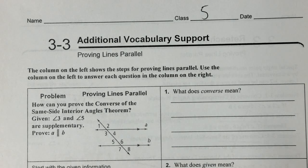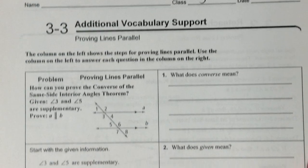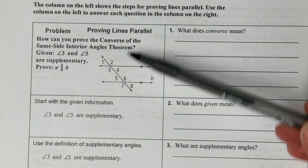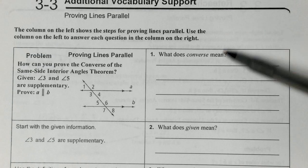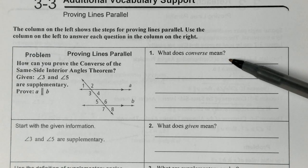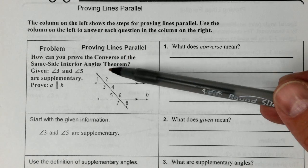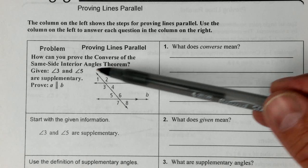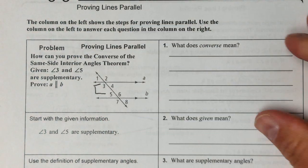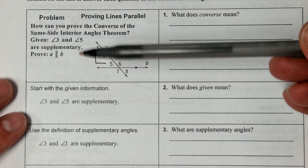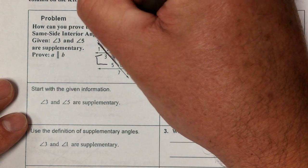We already finished the Pear Deck part. Now with the other parts of notes, make sure you put your class period. This shows you a proof which we'll talk about first, and then these are just additional vocab questions. The first thing is: how can you prove the converse of the same-side interior? They are given that angles 3 and 5 are supplementary, and you want to prove that these lines are parallel. The transversal in this case would be this line.